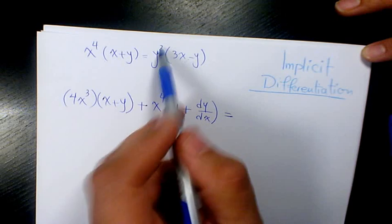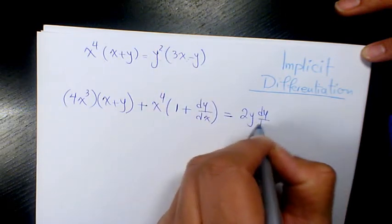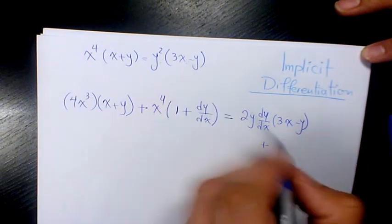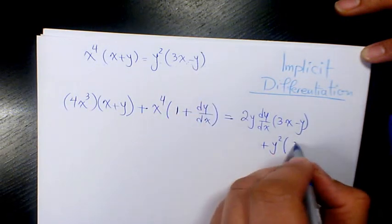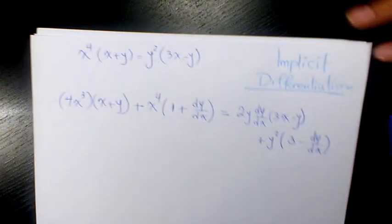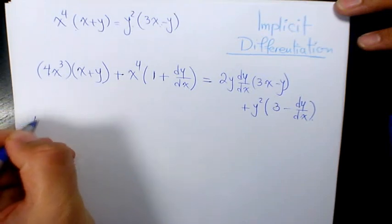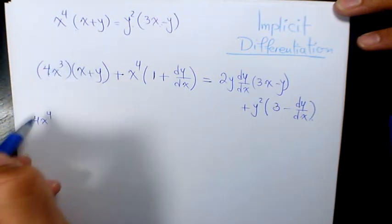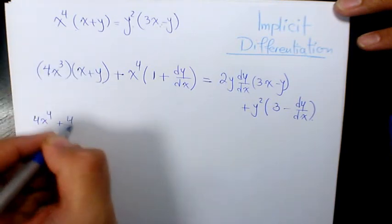Here we have product rule again. The derivative of y squared is going to be 2y dy over dx times 3x minus y, plus y squared times the derivative of 3x minus y, which is going to be 3 minus dy over dx. Now we start simplifying: 4x cubed times x is going to be 4x to the power of 4.